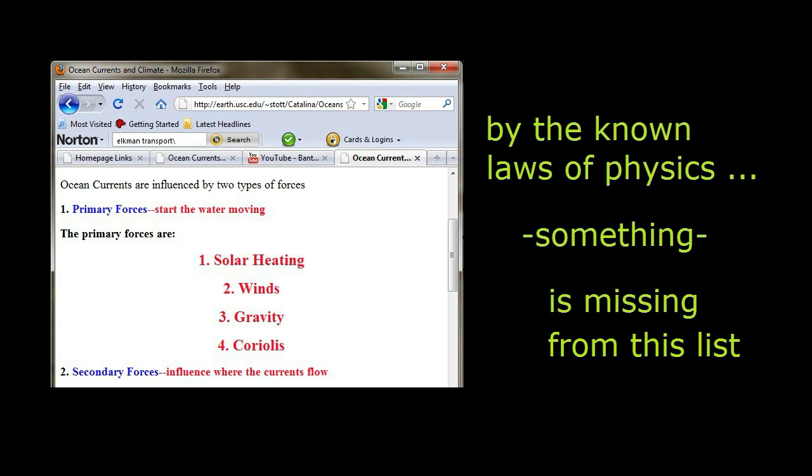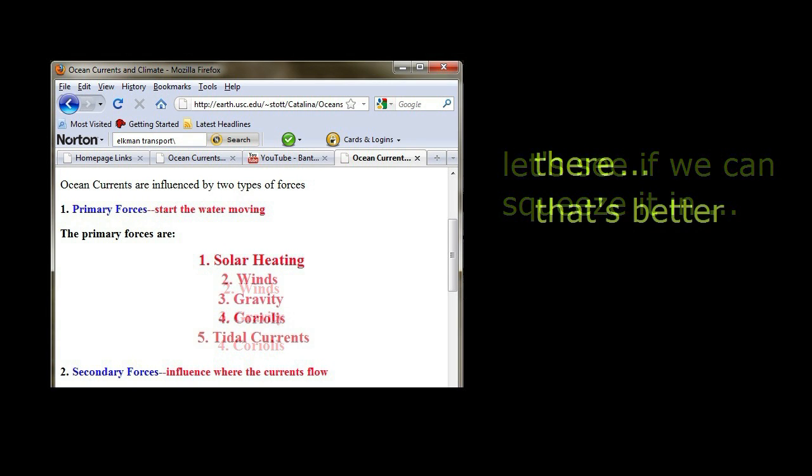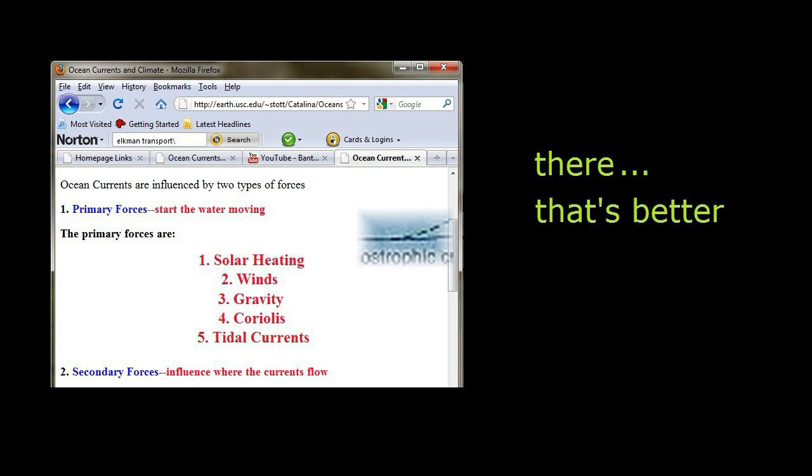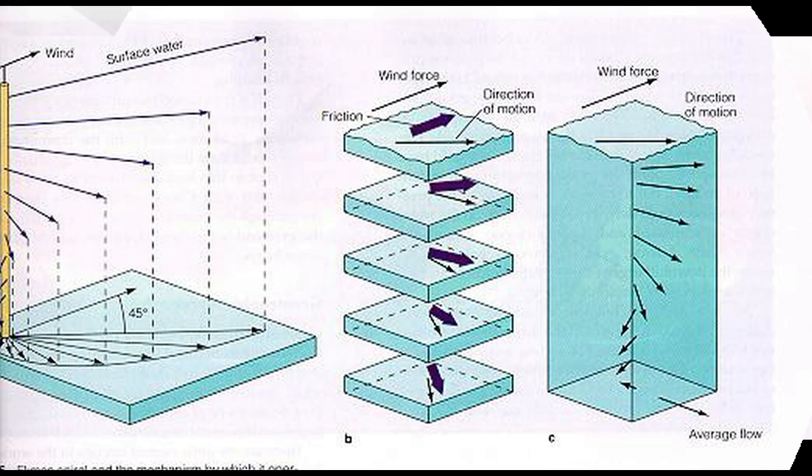Conspicuously absent from the list are known tidal effects arising from interaction with the moon. And no, these tidal effects are not subsumed under the gravity heading. If you read the material, you find that the only gravity they are talking about is water moving away from the mid-ocean gyre. That's a mound of water created by wind, solar heating, and or the Ekman transport mechanism.